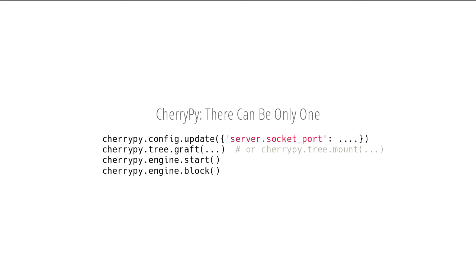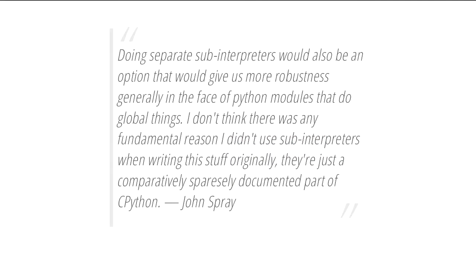I brought this up on the Ceph dev mailing list with two suggestions: maybe multiple CherryPys on different ports with start called only once, or a separate shared CherryPy module — but that introduces module dependencies. The other option was using Python sub-interpreters, which are pretty much isolated from each other but run in the same process. John's response was that sub-interpreters would also give us more robustness generally in the face of Python modules that do global things. The reason he didn't use them initially was that they were fairly sparsely documented.